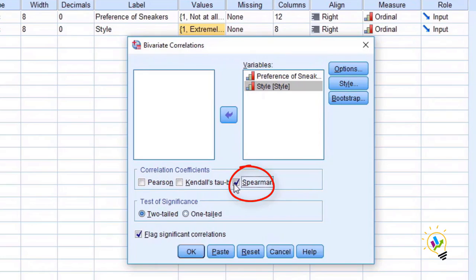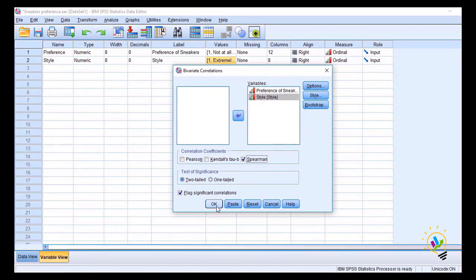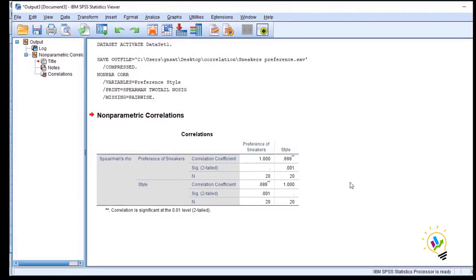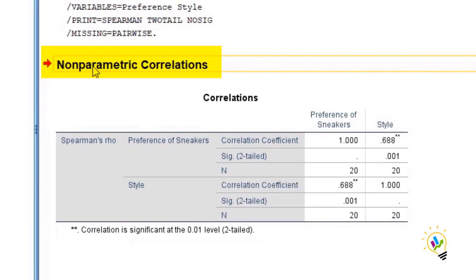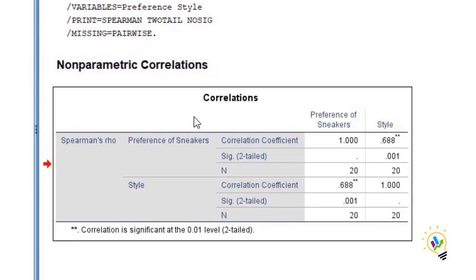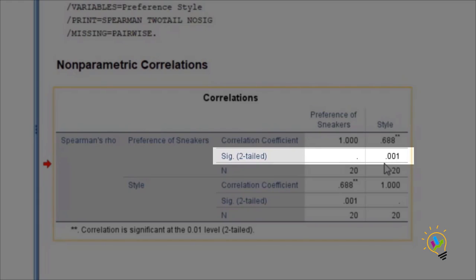Now this is the output screen where we have non-parametric correlation. Coming to the output, the correlation between the two variables—let us see first the significance. The significance is 0.001.